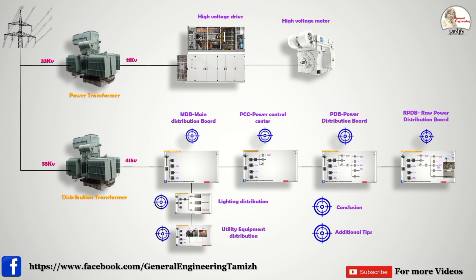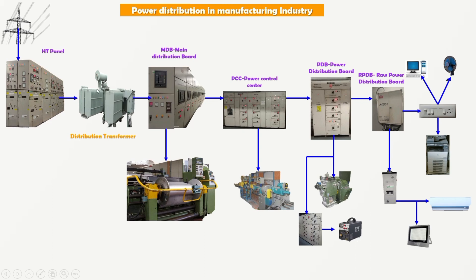Now we've covered all topics related to power distribution. Here is a summary: Industrial supply comes from high voltage through the HT panel to the transformer, which converts to 415V, which feeds the MDB. From MDB, three types of loads are connected: high kilowatt manifesting equipment, MRNC equipment (lighting and firefighting distribution), and utility equipment. From MDB, PCC connects medium kilowatt equipment; PDB also connects medium kilowatt equipment. From PDB, RPDB connects all single-phase equipment.